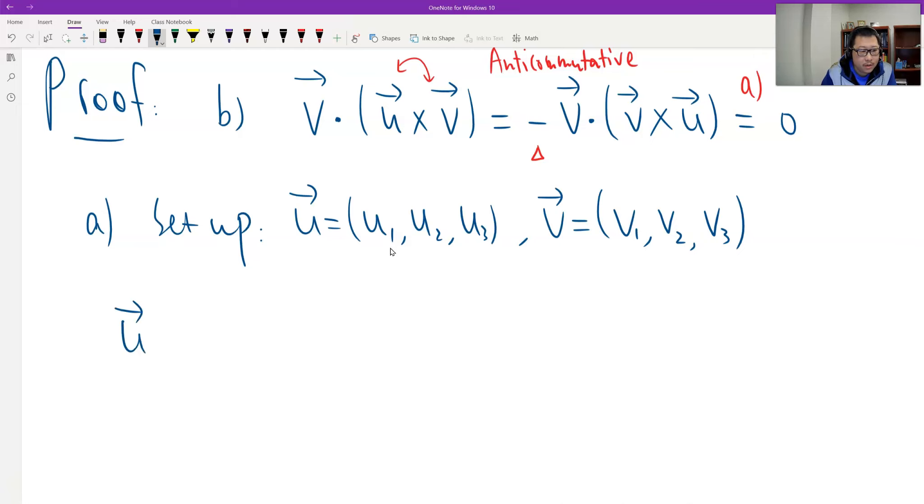And then we'll look at u cross v. What is u cross v? Now we find u cross v first. The definition, there's a vector. The first component is this. We don't have the first component, we don't have u1, we don't have v1. Therefore, it's the determinant with u2, u3, v2, v3.